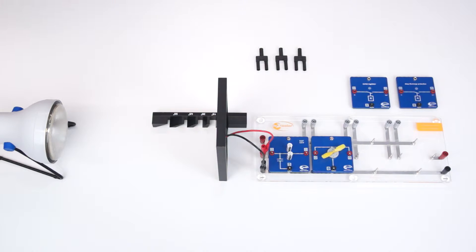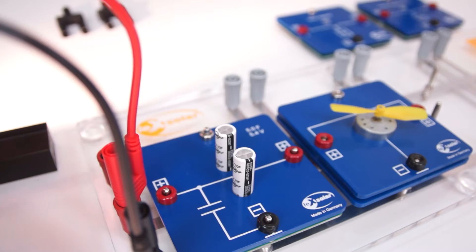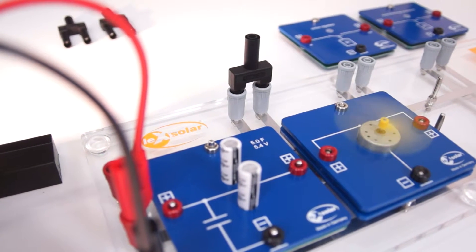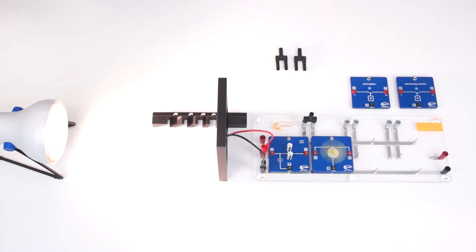Now we turn on the lamp again and connect the motor with the two other devices using a short-circuit plug. The motor turns over, and if we now turn the lamp off, the capacitor replaces the solar module as an energy source and the motor continues to be driven.